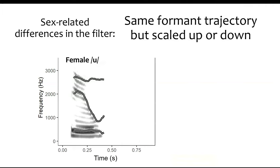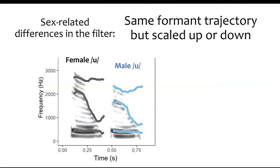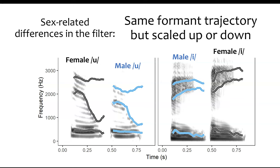When thinking about sex-related differences in the filter, we're thinking about differences in formant frequencies that scale inversely with the size of the talker. For example, if we have an OO vowel spoken by a woman and imagine the same vowel spoken by a larger man, you'd expect all of those formant frequencies to be scaled down. Conversely, for a vowel spoken by a man — say the E vowel — you'd expect those frequencies to scale up for a woman producing the same sound.